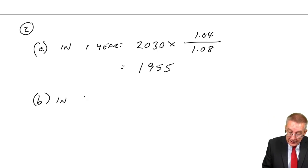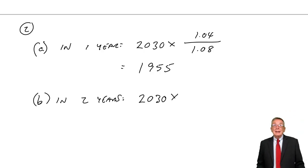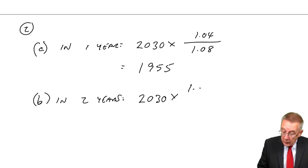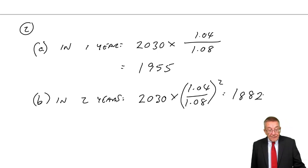And finally, what will it be in two years' time? Like before, but I won't do it both ways. Either take your 1,955 in one year and multiply by another 1.04 over 1.08. Or alternatively, take today's exchange rate and to get a forecast for two years' time, 1.04 over 1.08 squared, which gives me 1882. 1882, 1883, not worried about a bit of rounding. All right, there we are.